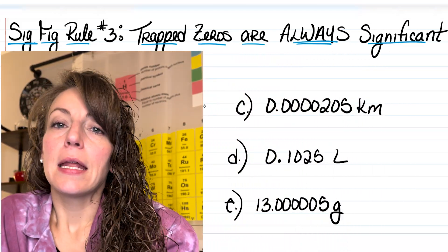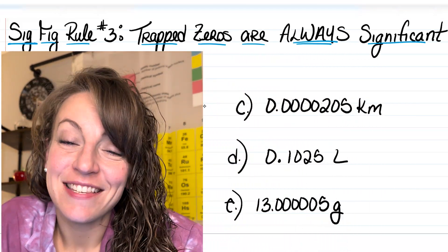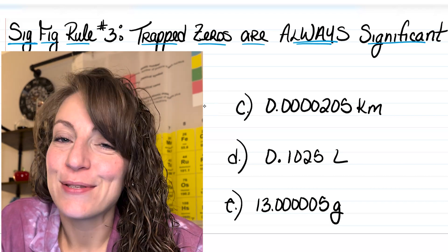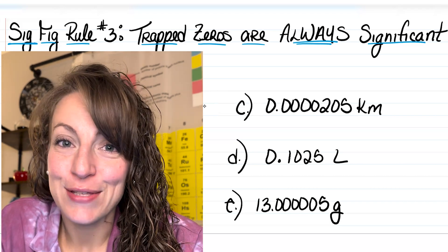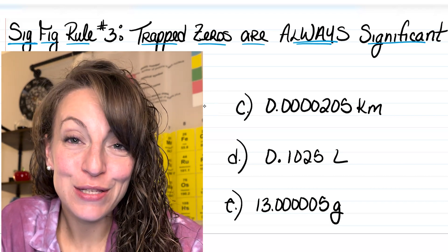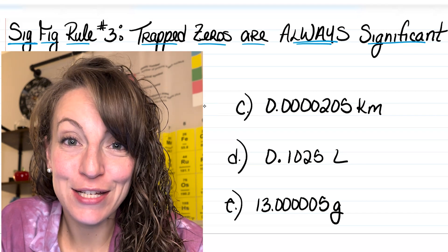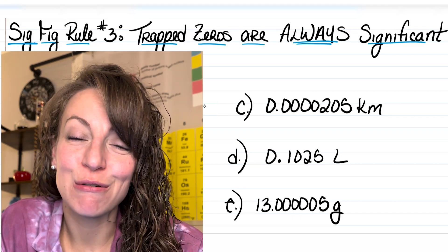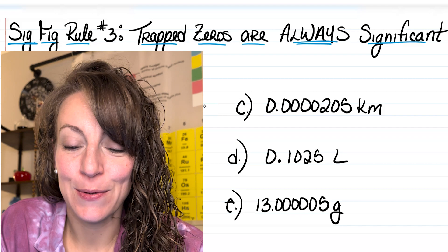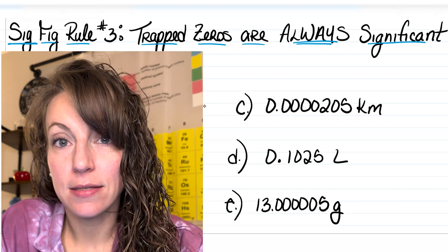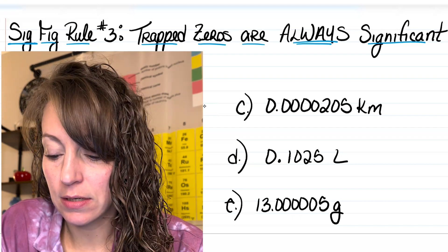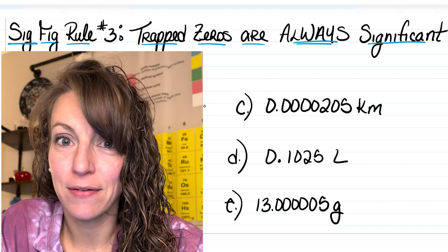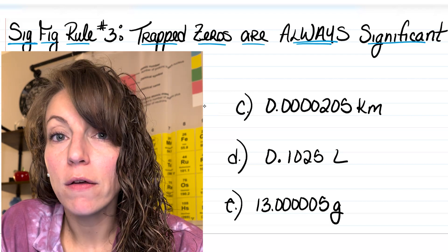Now in a previous video I discussed leading zeros. Leading zeros are zeros out in front of non-zero digits and they never count towards your total number of sig figs. So in letter C I have zero point zero zero zero zero zero zero two zero five — all of those leading zeros